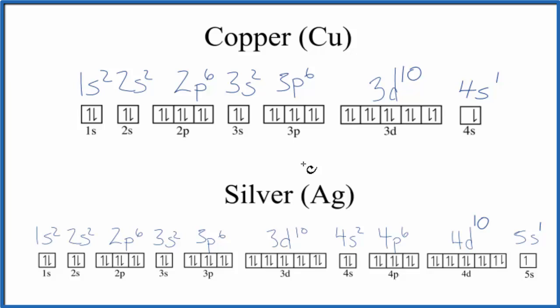If you need help writing out the electron configurations for chromium, copper, silver, or molybdenum, there are links to videos that explain it in depth in the description of this video. This is Dr. B with some exceptions to the electron configurations that we would find on the periodic table. Thanks for watching.